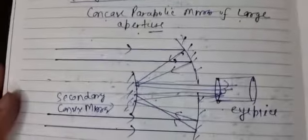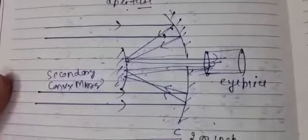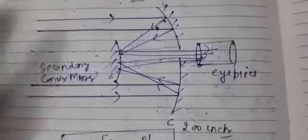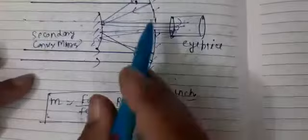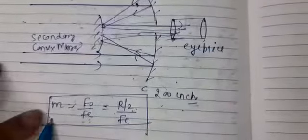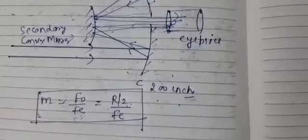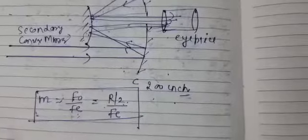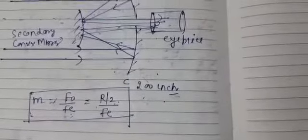On every alternate year, this telescope has been asked in exams. On telescopes and microscopes, there is definitely one diagram-based question. Reflecting type telescope is one of those cases — its diagram, its theoretical construction, how it is built, how rays are reflected, and the formula for magnifying power — these are all important.